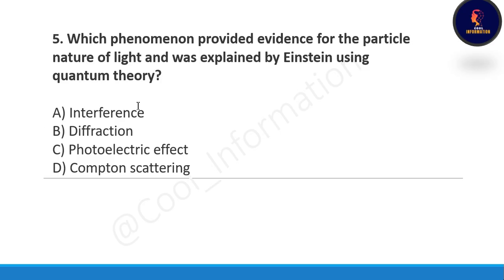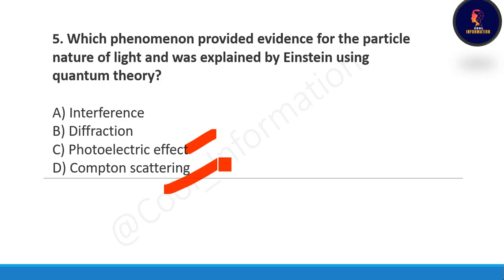Next question: which phenomenon provides evidence for the particle nature of light and was explained by Einstein using quantum theory? This is a very simple and frequently asked question. Options are: interference, diffraction, photoelectric effect, or Compton scattering. Correct option is C, the photoelectric effect.